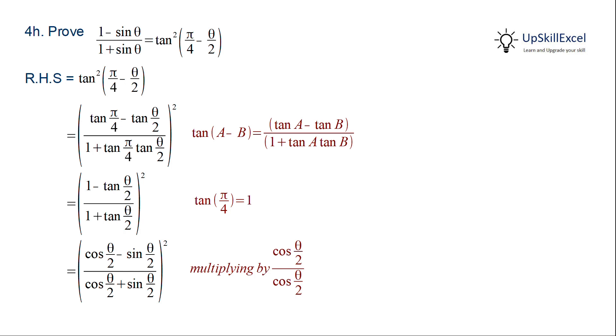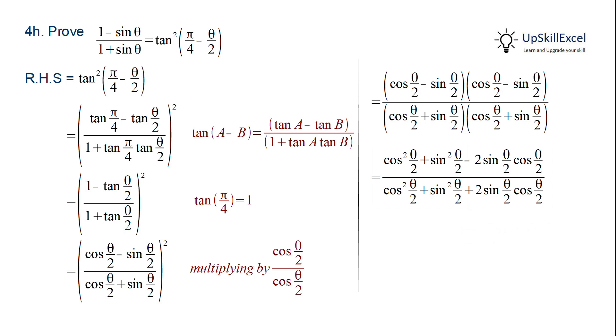Now we can do the square, that is multiply numerator and denominator by itself. Now here we see that both in numerator and denominator we have cos square theta by 2 plus sin square theta by 2.